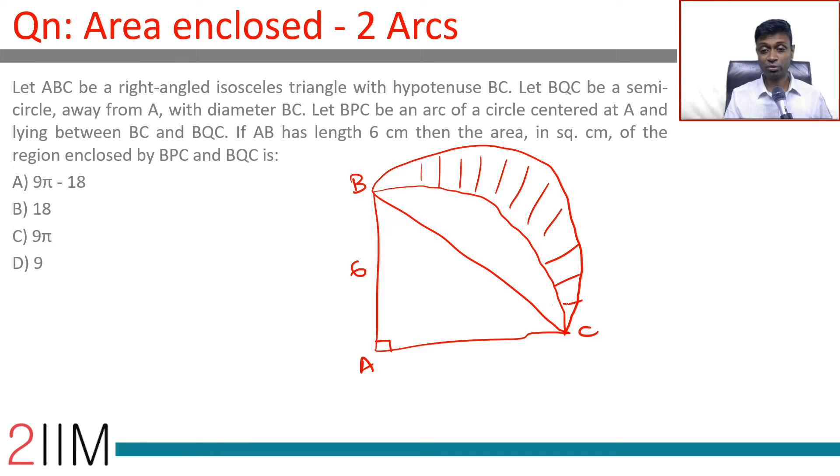We find area of this—this is Q, this is B. So we find area of the semicircle BQC. From that, we subtract area of this segment, BPC.